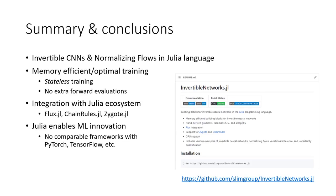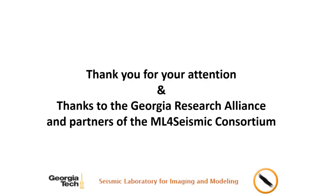To summarize: we introduced InvertibleNetworks.jl, a framework for invertible neural networks and normalizing flows in Julia, which provides memory efficient, completely stateless training — no activations stored, and no extra forward evaluations required during training. The package integrates seamlessly with the Julia ecosystem. Julia's design is what made this innovation possible — trying to do similar things in Python with PyTorch or TensorFlow is not feasible in the same way, because Julia, Flux, and chain rules allow you to put all these components together. Thank you for your attention.